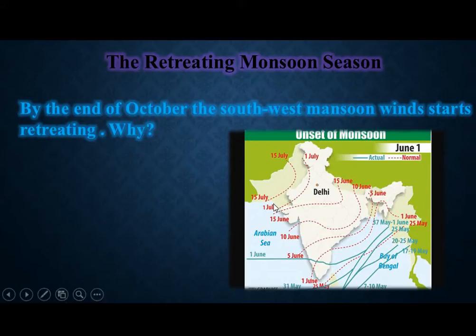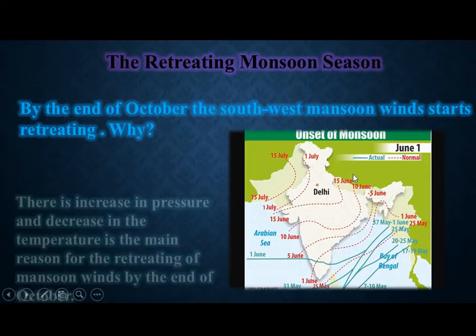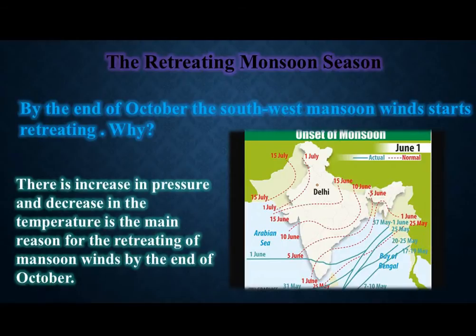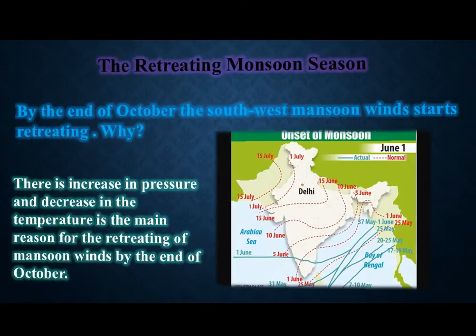You can see date-wise how the wind blows — on 15th of July, 1st of July, and during June, around 5th to 10th of June, how the wind blows during that time is shown here. An increase in pressure and a decrease in temperature is the main reason for the retreating monsoon. The pressure increases and the temperature keeps decreasing, because of which the retreating monsoon winds start by the end of October.